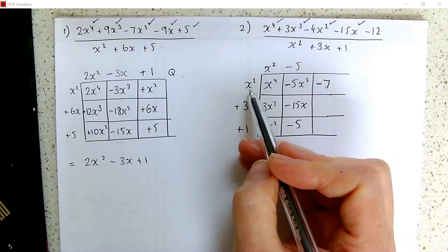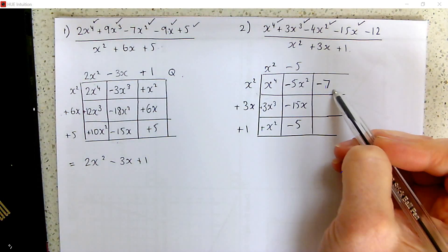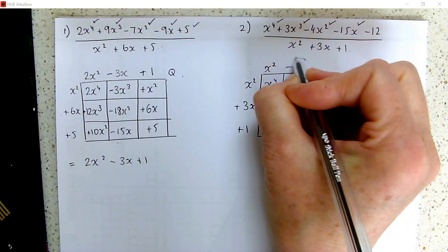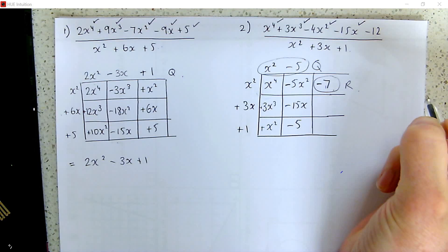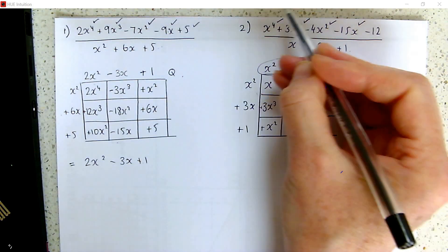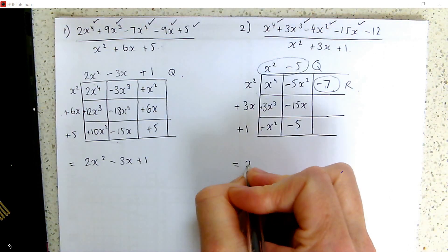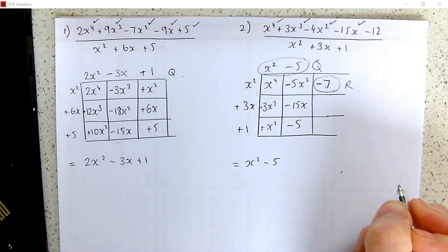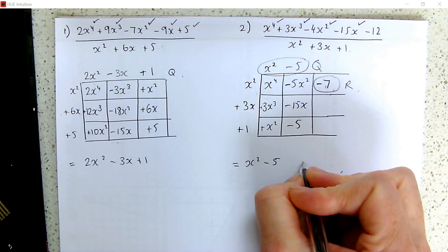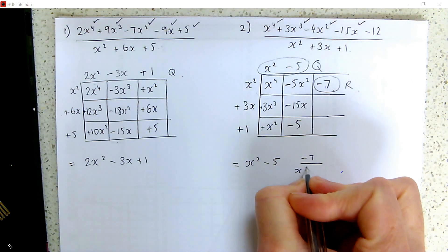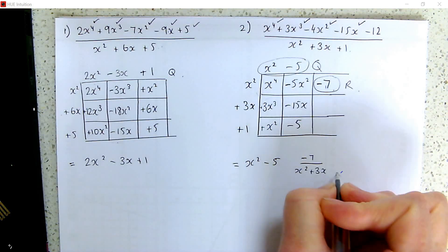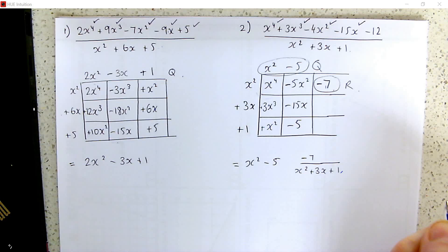However, when we multiply x squared we'd have to multiply by a fraction to make minus 7, so we're going to stop here — this is our remainder. This part is the quotient and this part is the remainder. So the answer to this division is x squared minus 5 — that's our quotient — plus our remainder, which is minus 7 over the divisor x squared plus 3x plus 1.